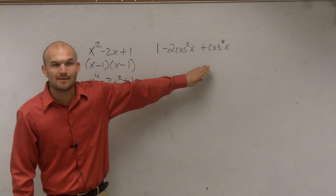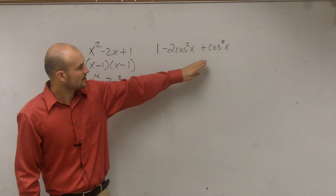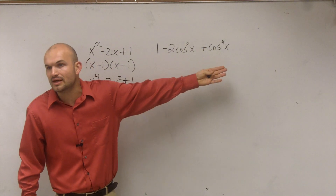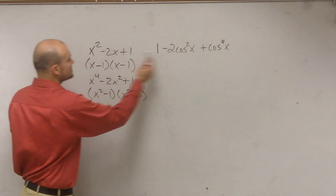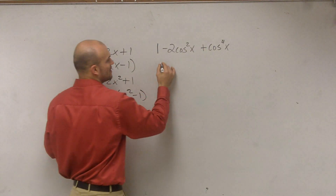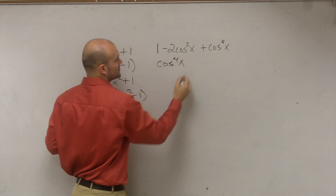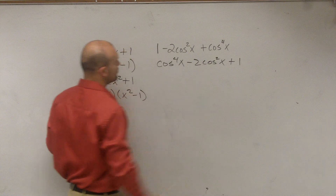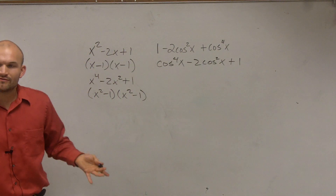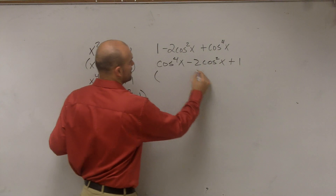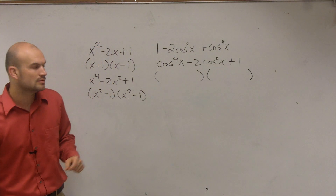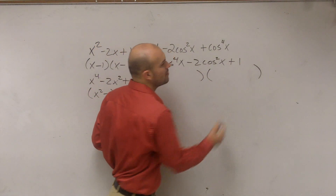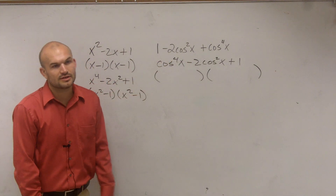Now this looks a lot more difficult because we're dealing with cosines, but ladies and gentlemen, it's really the exact same thing. First of all, let's rewrite it so it's in this format. So I have cosine to the fourth degree of x minus 2 cosine squared of x plus 1. When factoring, all I'm simply doing is creating factors that are going to multiply to give me my product.